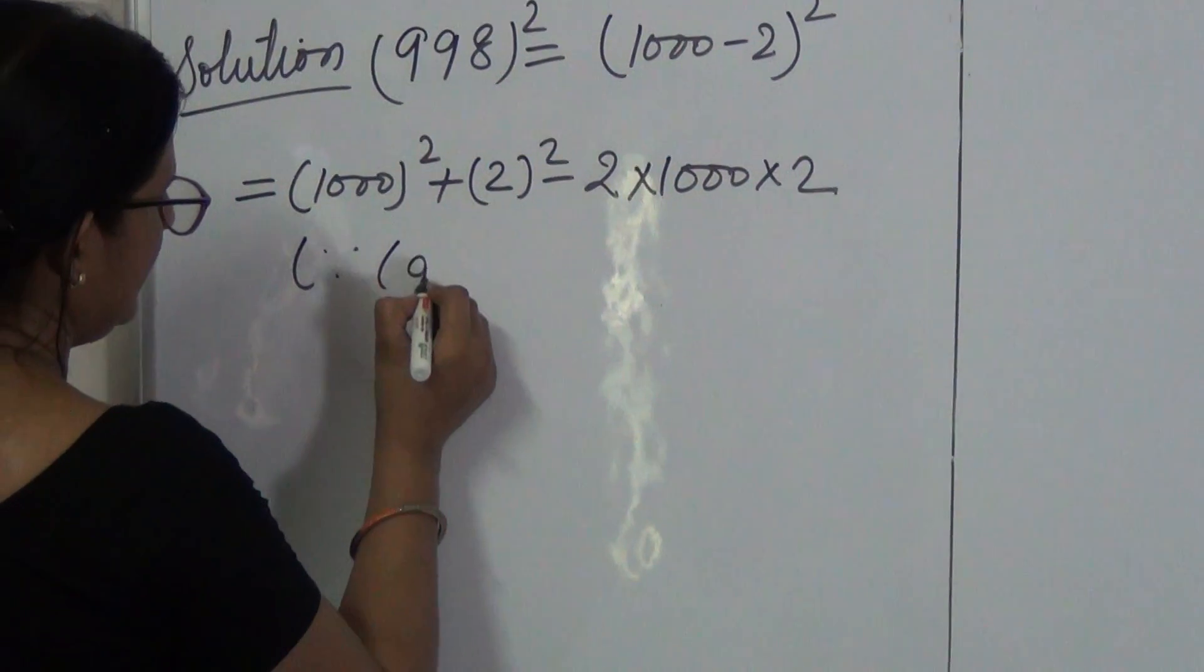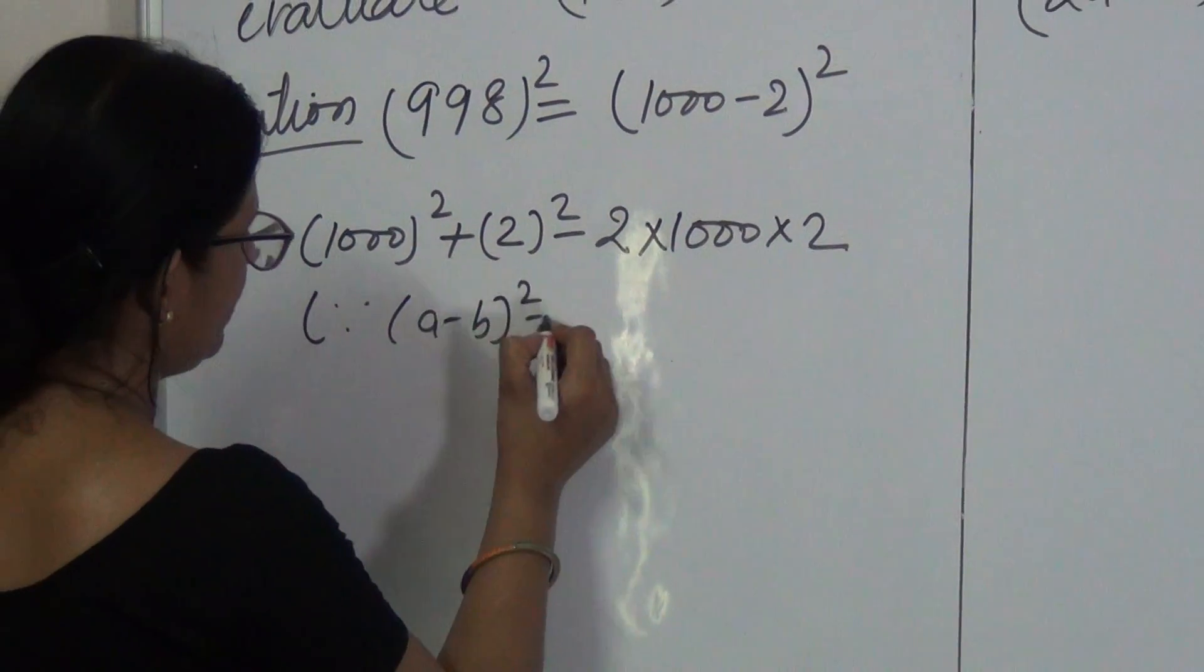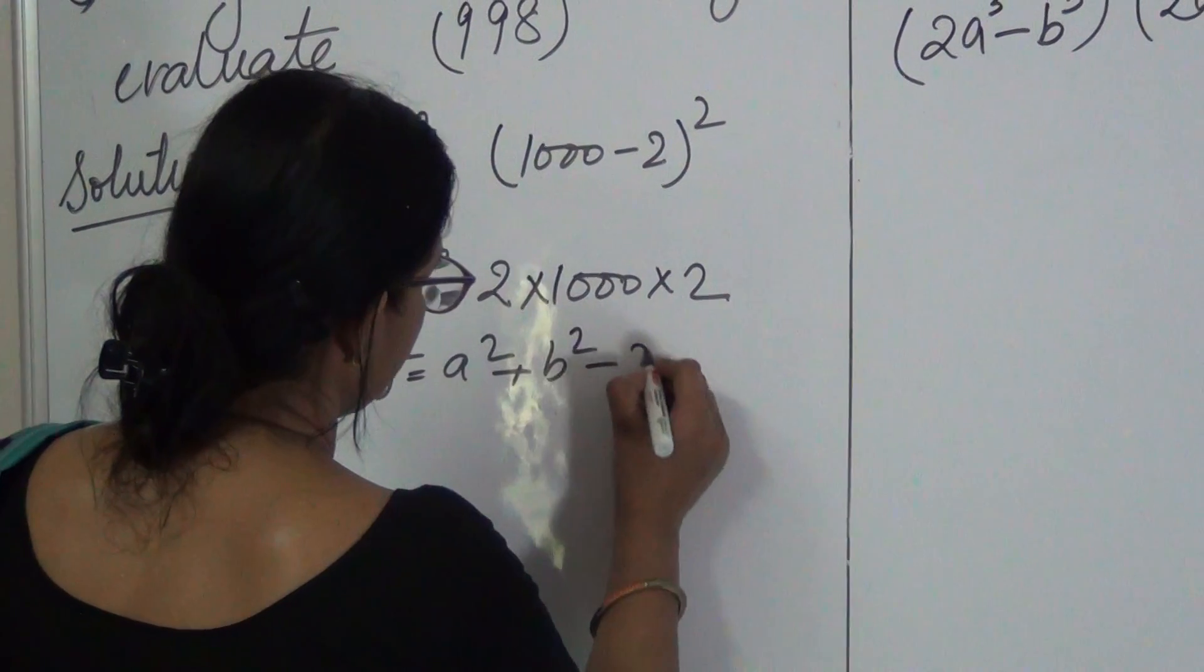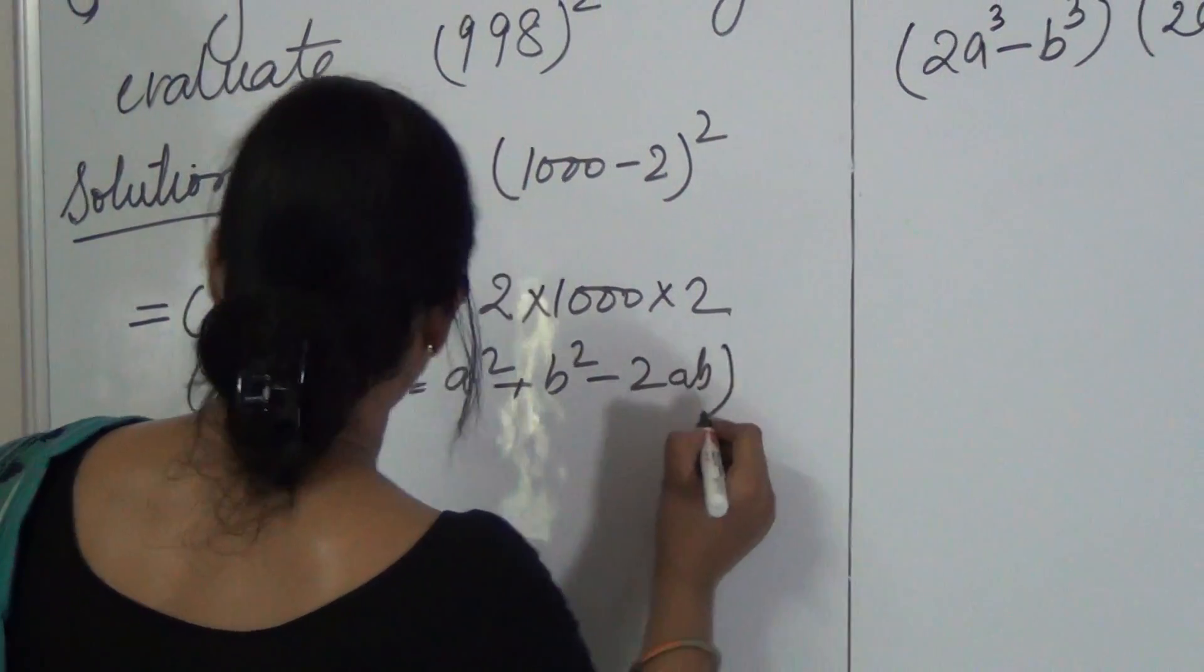Since A minus B whole square is equal to A square plus B square minus 2AB.